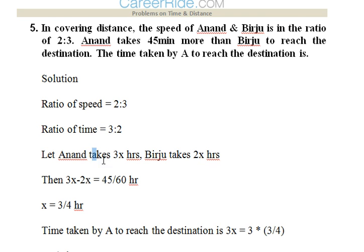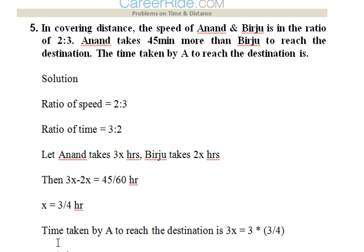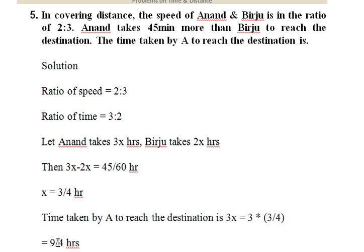Let Anand take 3x hours and Birju take 2x hours. Anand takes 45 minutes more than Birju, as stated in the question. So 3x minus 2x equals 45/60. Therefore x equals 3/4. The time taken by Anand to reach the destination would be 3x. Substituting x = 3/4, we get 3 × (3/4) = 9/4. So 9/4 hours is the time taken by Anand to reach the destination.